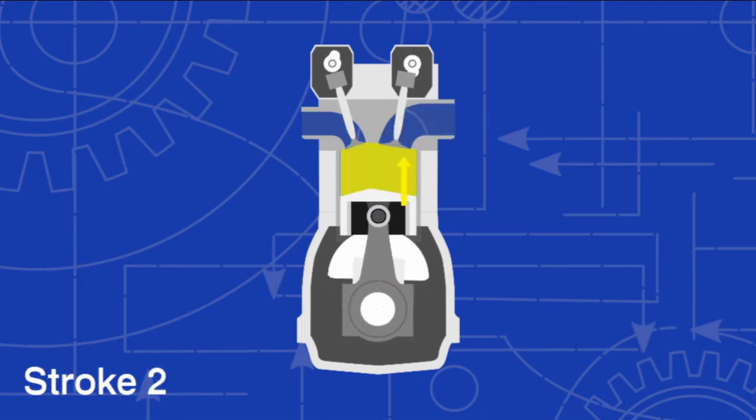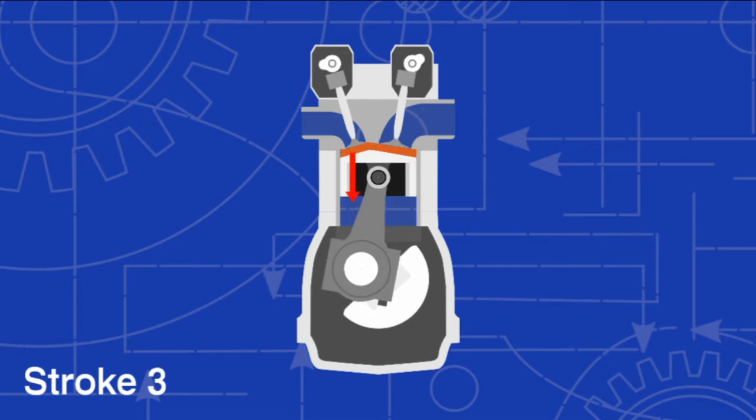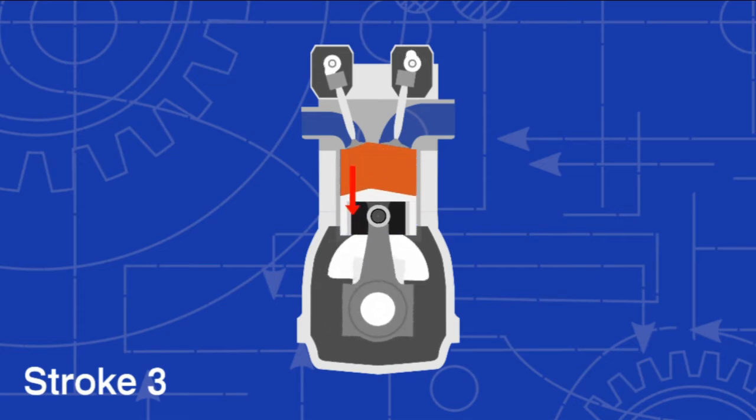The piston then reverses, pressurizing the gas in the compression stroke. Once compressed, the fuel mixture is ignited, and the high pressure generated by the combustion forces the piston downwards in the power stroke.